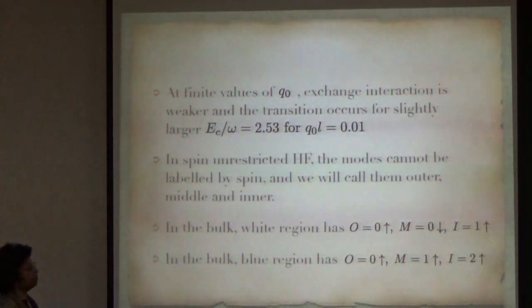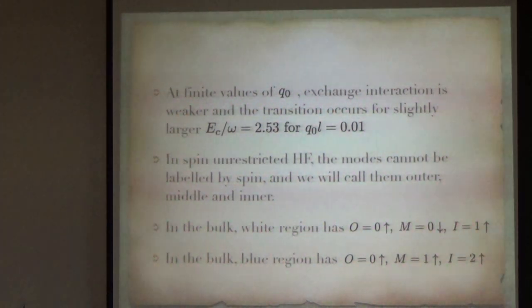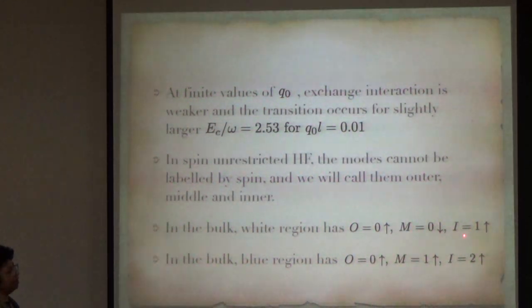We will do spin unrestricted Hartree-Fock, which basically means that the modes, edge modes can no longer be labeled by spin. So, we will have to call the three modes as outer, middle and inner. In the bulk, actually, there is no real spin mixing. So, in the bulk, the white region has outer 0 up, middle is 0 down, inner is 1 up. In the bulk, the blue region has 0 up, 1 up, 2 down, as I already said, 0 up, 1 up, 2 up.